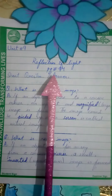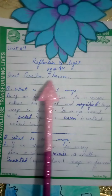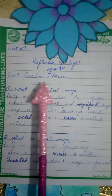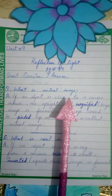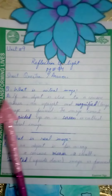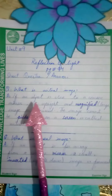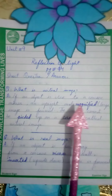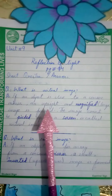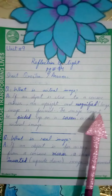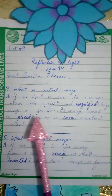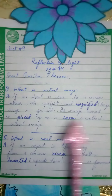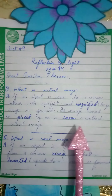Page number 94, short questions and answers. Question number one: What is a virtual image? Answer: If an object is close to a concave mirror, an upright and magnified large image is formed.